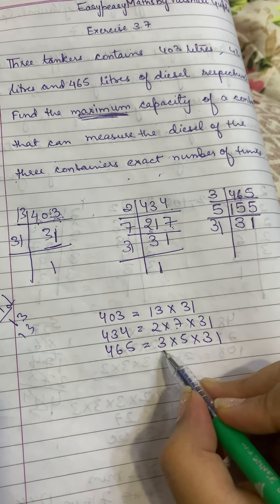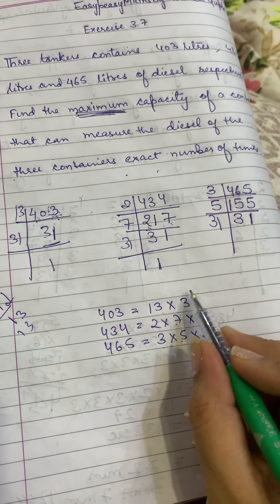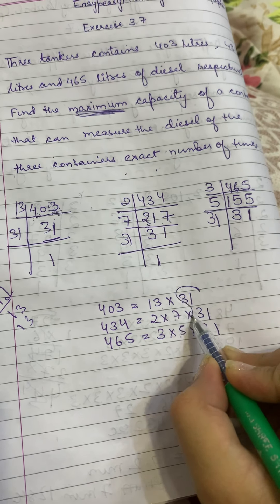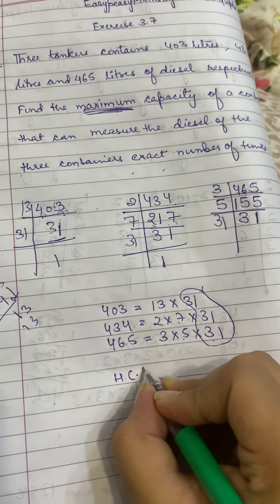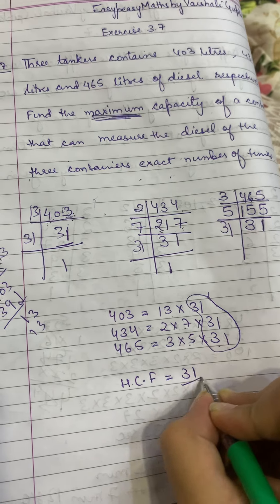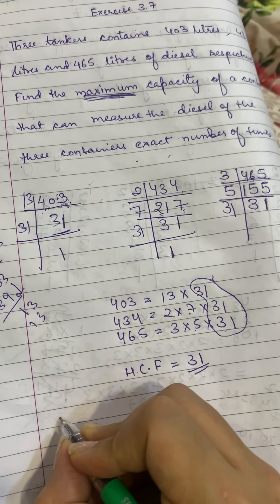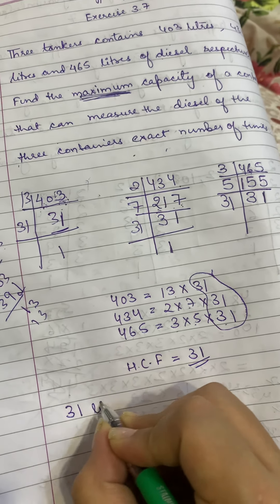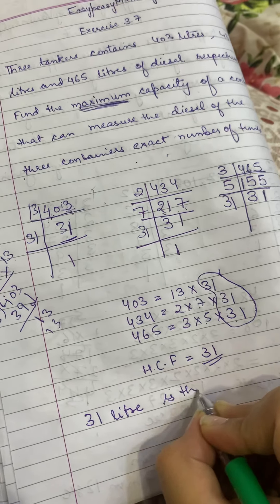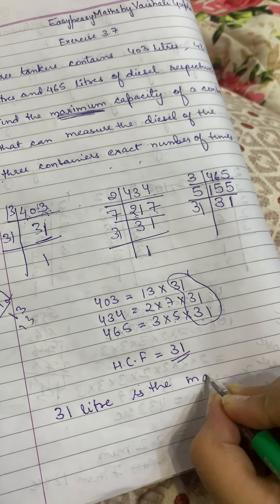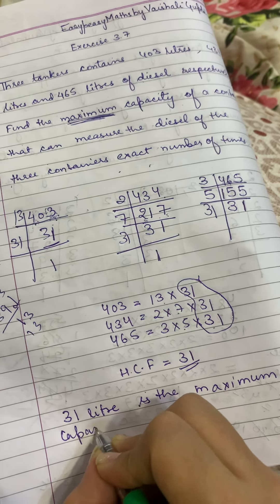So here the factors are 2, 7, 3, 5, 31, and 13. But one factor which comes in all three and comes one time is 31. So HCF is 31.